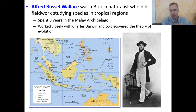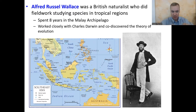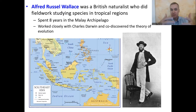Alfred Russell Wallace spent eight years floating around the Malay Archipelago studying species. That experience of seeing all these tropical species — it's right at the equator, very hot, very humid — gave him insights that helped him formulate theories. He eventually co-discovered the theory of evolution along with Darwin.